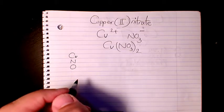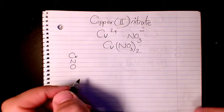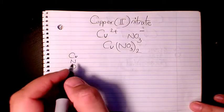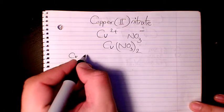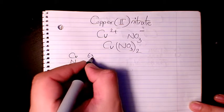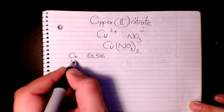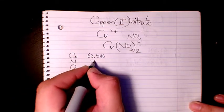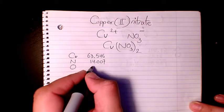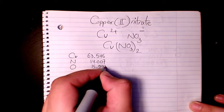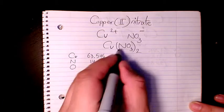And then I need to use the periodic table to find out the atomic mass of all these elements. So we have 63.546 for copper, nitrogen is 14.007, and oxygen is 15.999.